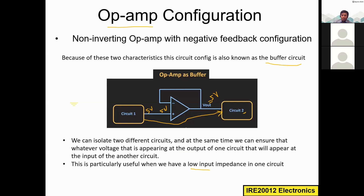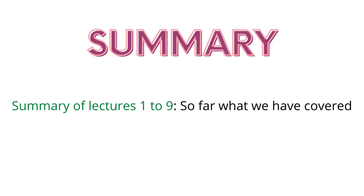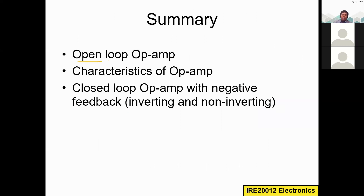If the input impedance is low, the circuit will treat circuit two as a load rather than as a separate circuit. That is why we place the voltage follower or buffer in between. In the open-loop configuration there is no feedback, and we know the formula: V-out equals VD multiplied by A, where VD equals V1 minus V2.